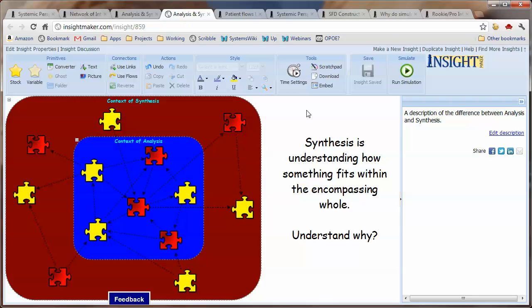What's appropriate is to do both analysis and synthesis so that you do analysis to understand the parts of something and the way those parts interact. But you also have to understand the way that thing interacts in a larger context. Then you begin to understand why it is the way it is once you understand the larger context that it's part of.